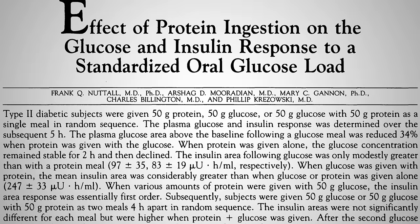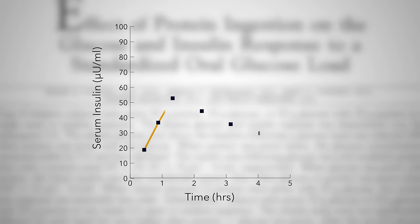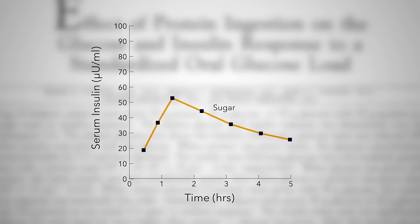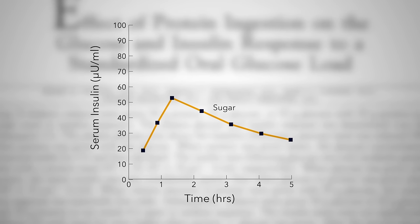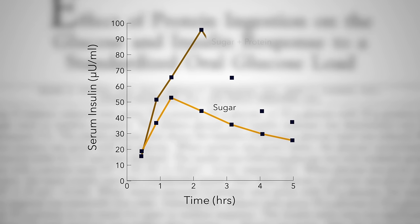You can do it with straight sugar water. If you do a glucose challenge test to test for diabetes, where you drink a certain amount of sugar, this is the spike in insulin you get. But if you take in the exact same amount of sugar with some meat added, you get this.